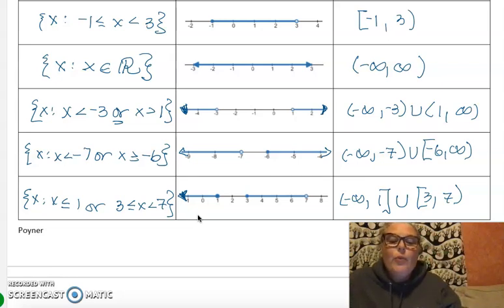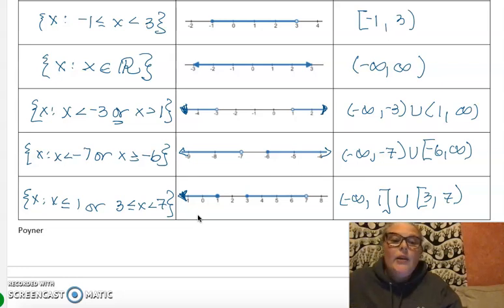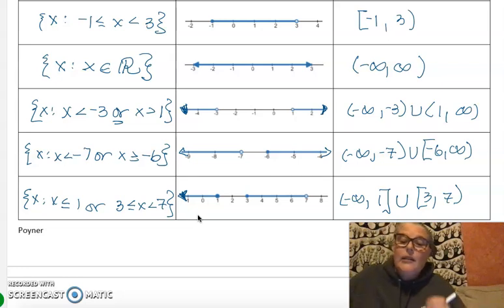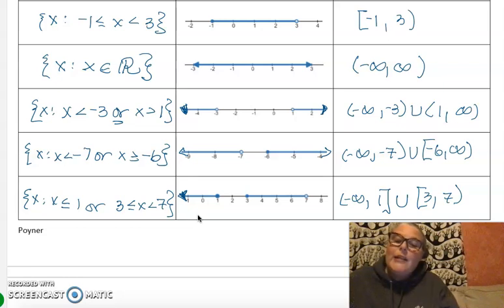For the last problem, you have a ray and then a line segment. In set builder: x is less than or equal to 1, or x is between 3 and 7 where 3 is included. In interval notation, it's much more elegant and condensed. That's the basics of interval notation — please try some of the other ones on your own.